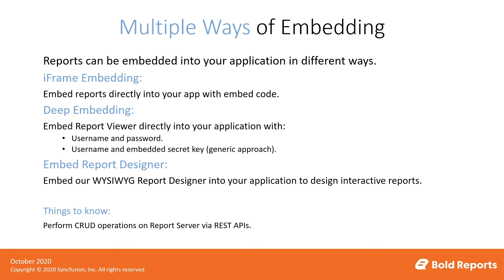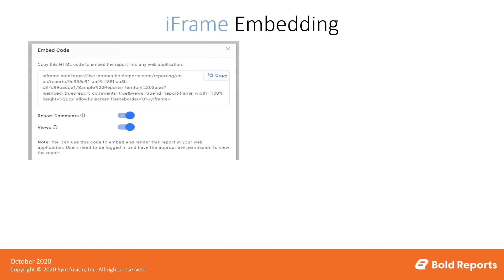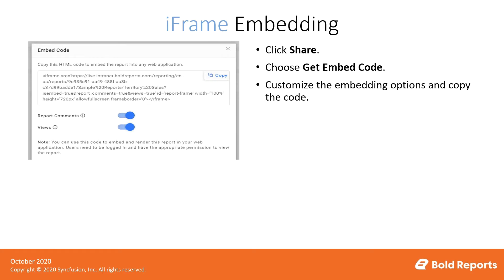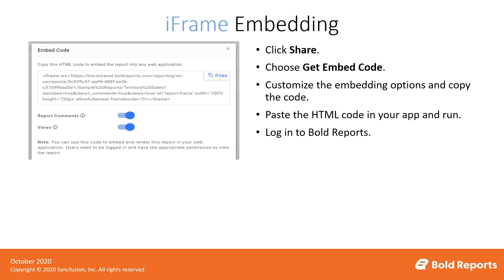Let me explain how iframe embedding can be achieved. First, log into the application and navigate to the report you wish to share, then click Share. After that, click Get Embed Code. Inside the embed code, you can customize embedding options such as enabling or disabling report commands and views. Then simply copy the code and paste it into your application. Once done, it will prompt for login using Bold Reports credentials. The reports will then be rendered in your application via iframe.